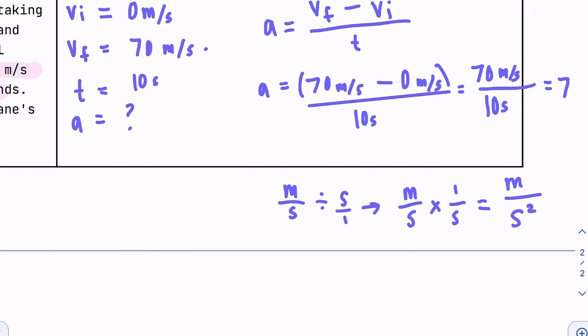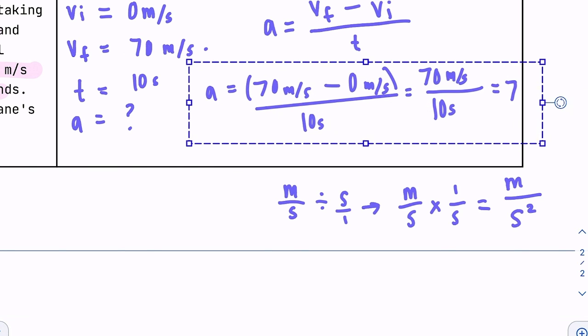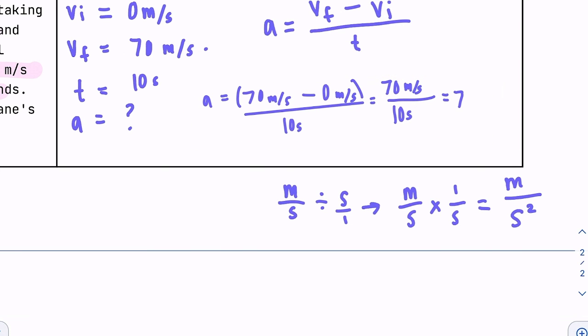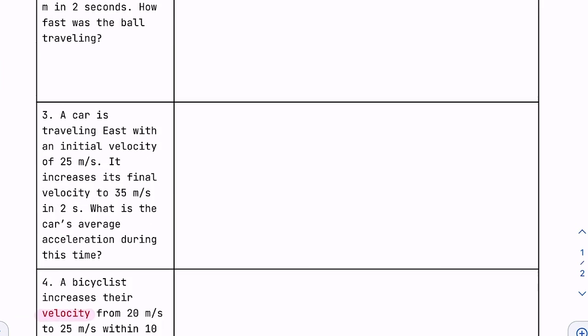So our unit, our final answer is 7 meters per second squared. And that is the correct unit for acceleration. So that's a good way to kind of check yourself. If you get the right units, then you probably got it right. So try out the rest of the assignment and let me know if you have questions.